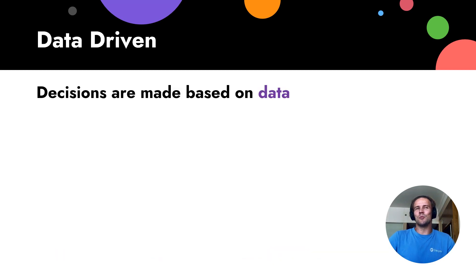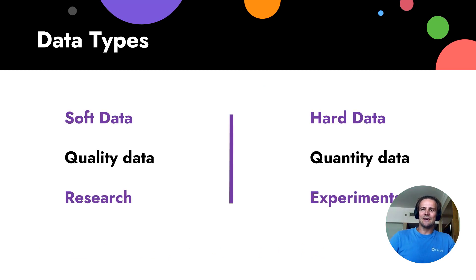We should base our decision on data. So we need data to make a decision. We have two types of data: soft data and hard data. Soft data we get from customer development. Listen now to my video about customer development. We will get deep quality data.